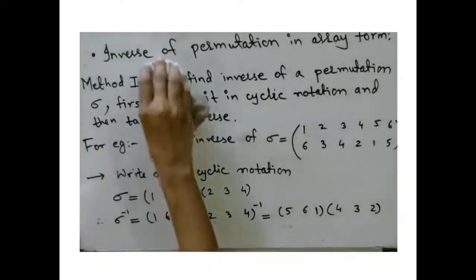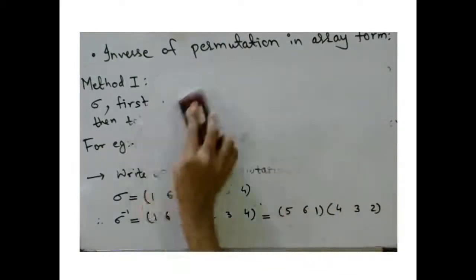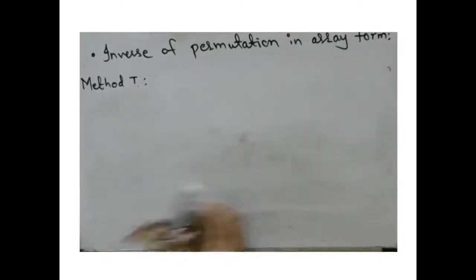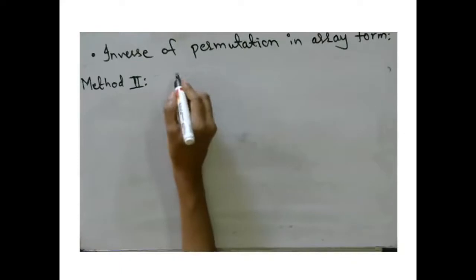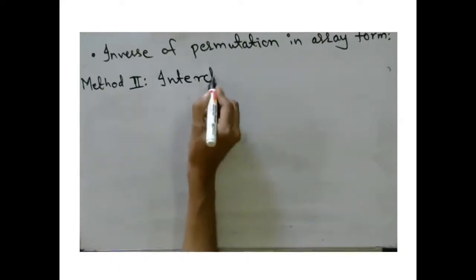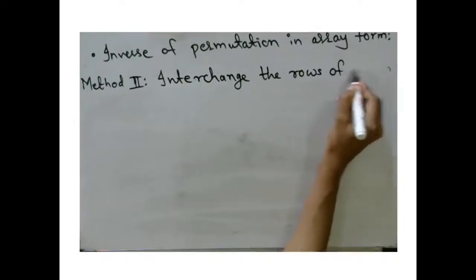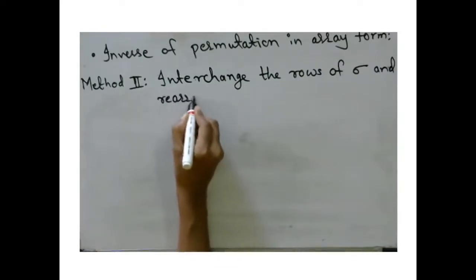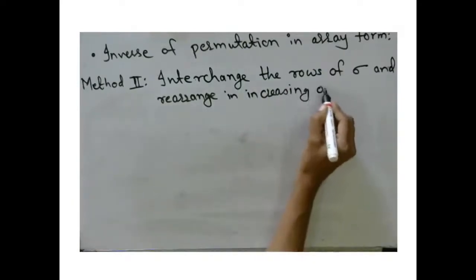There is another method — Method 2 — to find the inverse of a permutation in array notation. The second method is: interchange the rows of sigma and rearrange in increasing order. Let us see what this means by the same example.